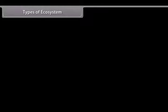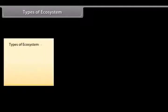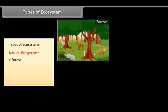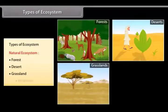Types of ecosystem. There are two different types of ecosystems. They are 1. Natural ecosystem in which we have forests, deserts, grasslands, mountains, etc.